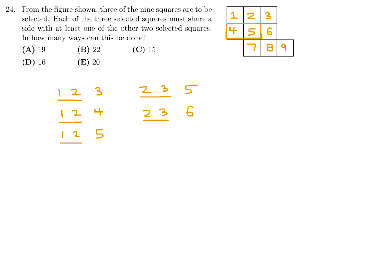The next one would be 3, 4. But 3, 4 cannot be selected together. The next one stuck together is 4, 5. What are the possible choices? For 4, 5, you can have 1, 4, 5, 2, 4, 5, 4, 5, and 6, 4, 5, and 7.